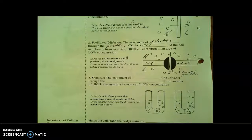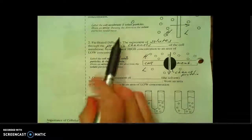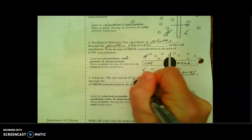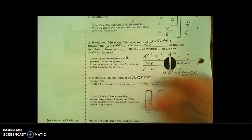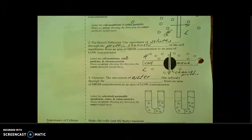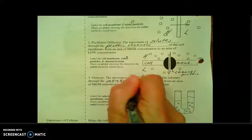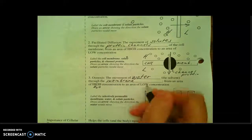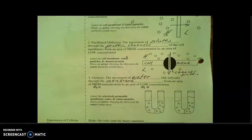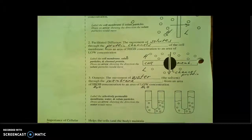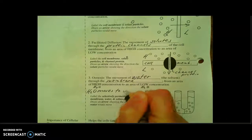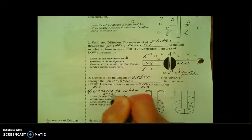Our final example of passive transport is what we call osmosis. And our other two, we were looking at movement of solute. But in osmosis, this time we're looking at movement of the solvent. Osmosis is specifically the movement of water through the membrane. And it's moving from areas of high water concentration to areas of low water concentration. Another way we can say this is that water moves to where the solute is at.